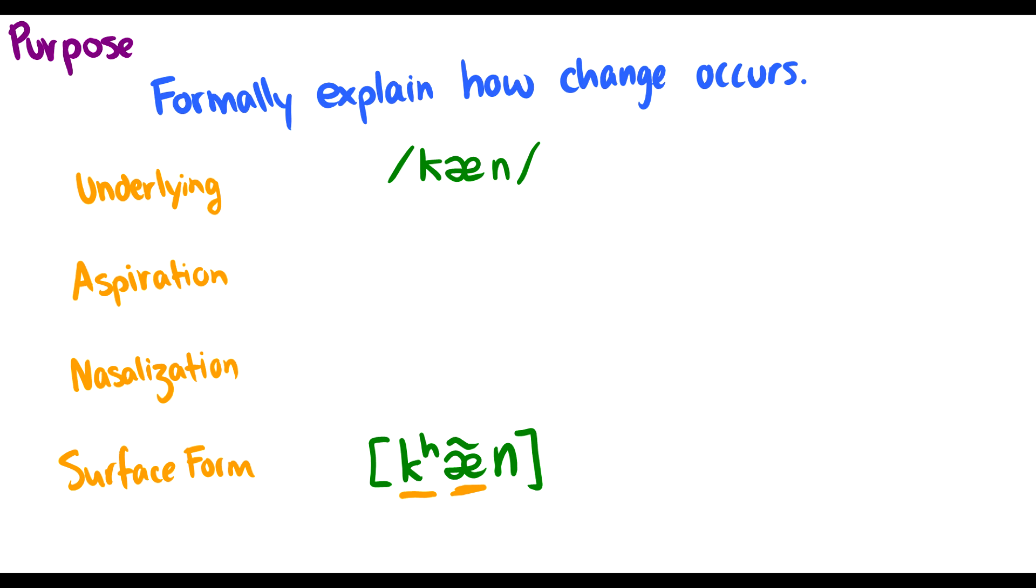So we have these rules and we need to order them in a way that when we take words and we get to the surface form, the rules interact properly and we don't get anything weird. So for instance, let's take a look at this flowchart. First we have the underlying word can. The first rule is going to be to aspirate it, so we get an aspirated K with this A and this N. And the second step is going to be to nasalize the vowel because it's before an N. So our surface form is can.